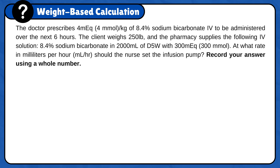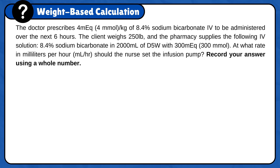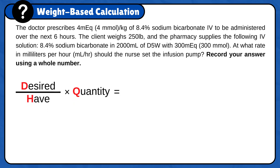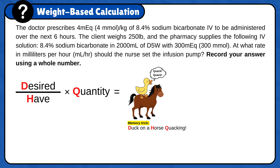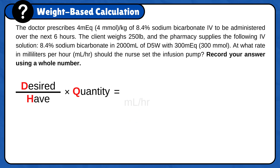The doctor prescribes 4 milliequivalent per kilogram of 8.4% sodium bicarbonate IV to be administered over the next six hours. The client weighs 250 pounds. The pharmacy supplies the following IV solution: 8.4% sodium bicarbonate in 2000 milliliters of D5W with 300 milliequivalent. At what rate in milliliters per hour should the nurse set the infusion pump? Record your answer using a whole number. First, set up the formula: desired over half times quantity — don't forget our crazy duck on a horse quacking. The next step is to add the unit answer, milliliters per hour.